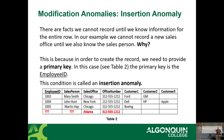An insertion anomaly is when you can't create a record until you know information for the entire row. For example, to add a new sales office in Atlanta, because the employee ID is the primary key, you can't add the office unless you also add an employee at the same time. You end up with a chicken-before-the-egg problem — you can't add an employee without an office, and you can't add an office without an employee. It's like me and a student trying to enter a room where neither can enter unless the other is already inside.